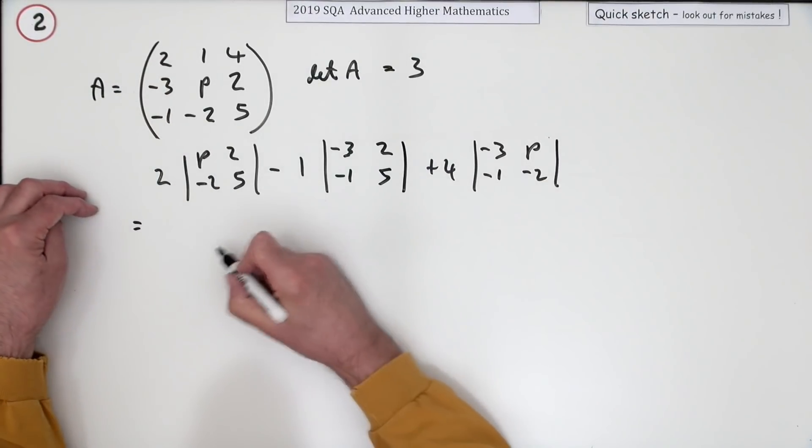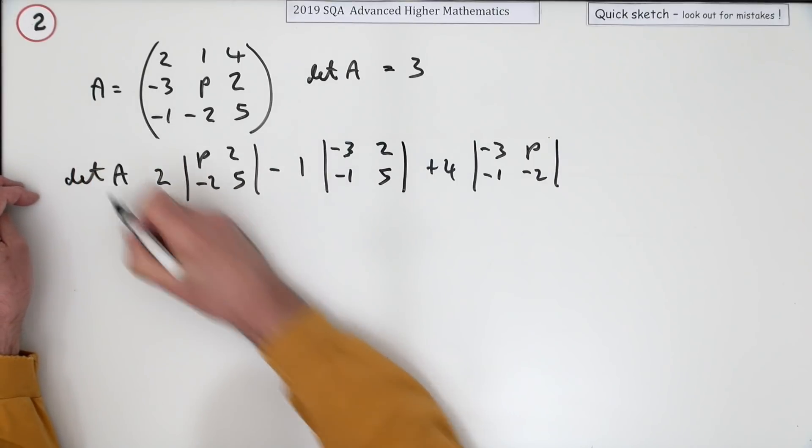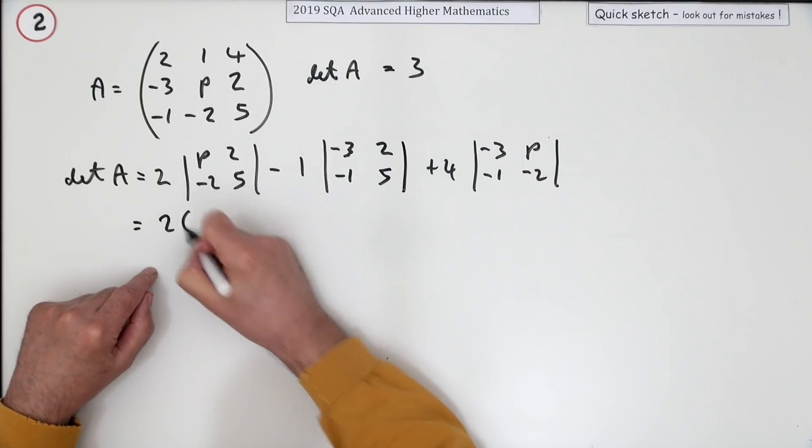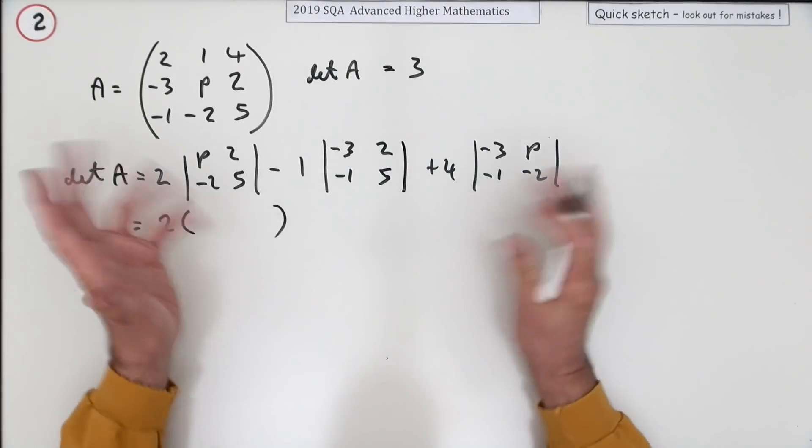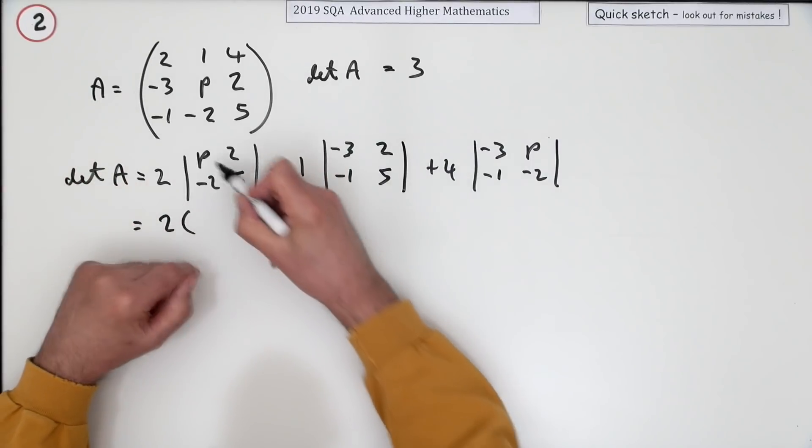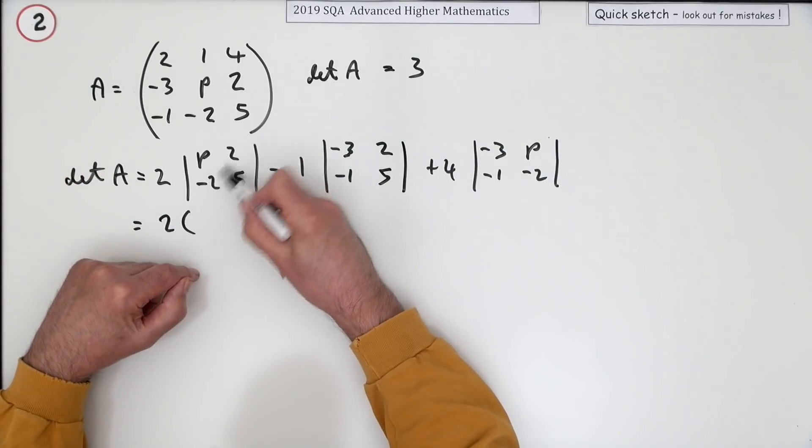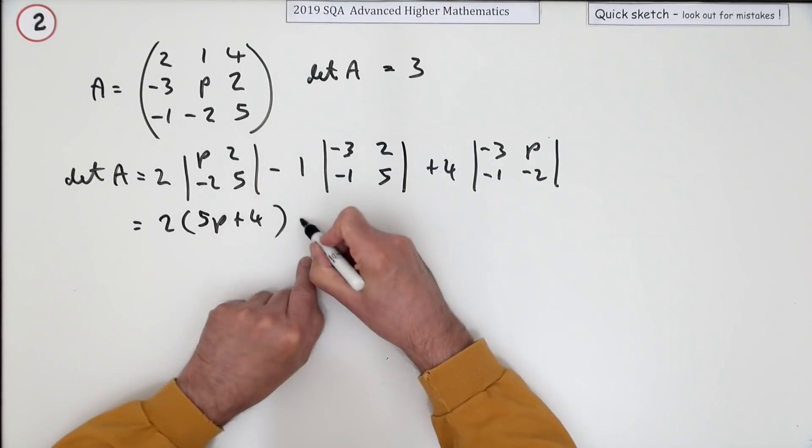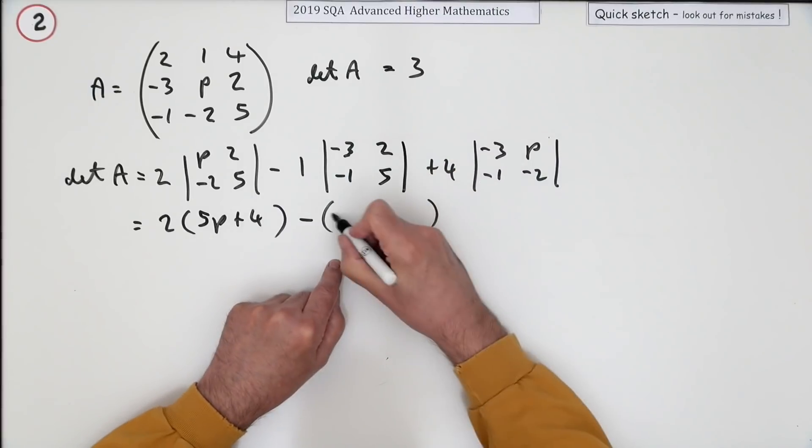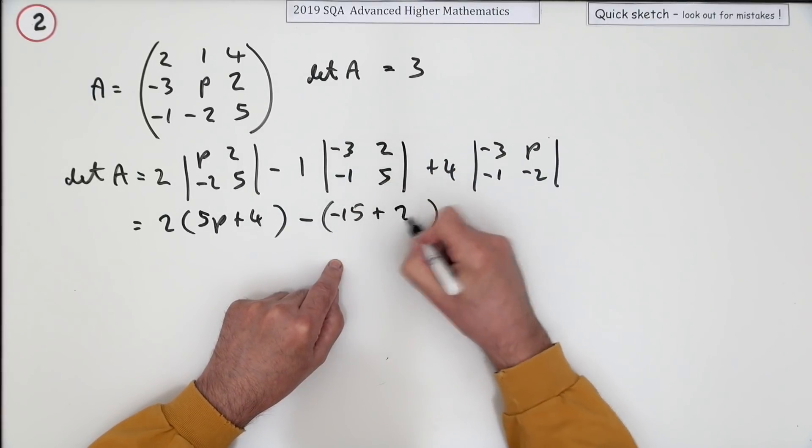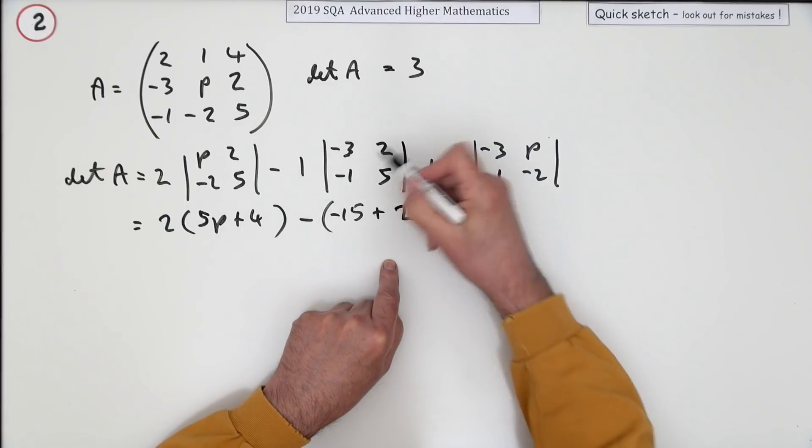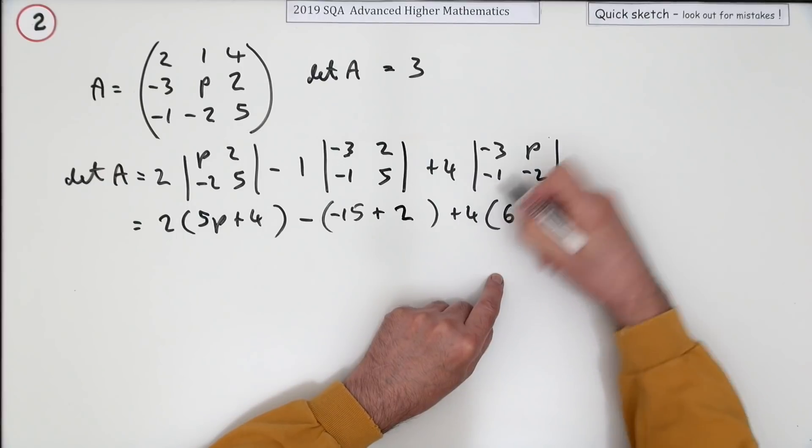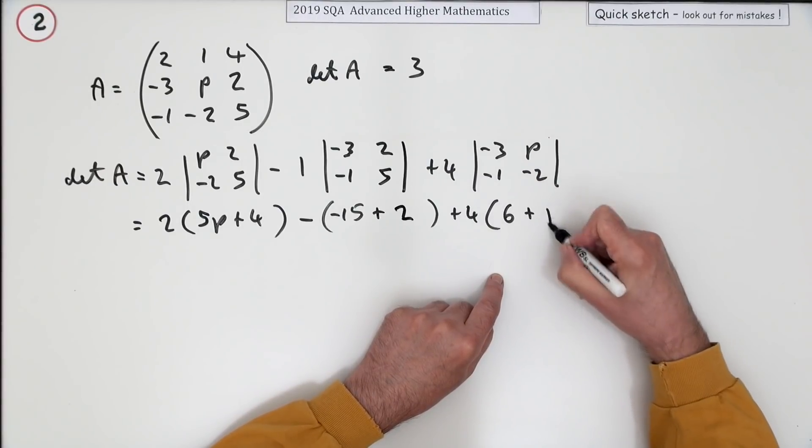Now it's just a case of—I should have put there determinant of A equals, or you can use the magnitude sign equals. So that's two times, I'm spelling all this out, I suppose just as well just to be safe with arithmetic because it's just loads and loads. 5P take away, so that'll be plus four, minus minus 15 take away, so it'll be plus two. Main diagonal minus the other diagonal, plus four times main diagonal six, minus the other diagonal will again be a plus, plus a P.